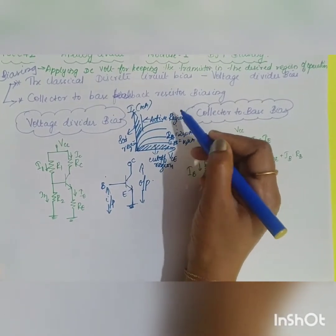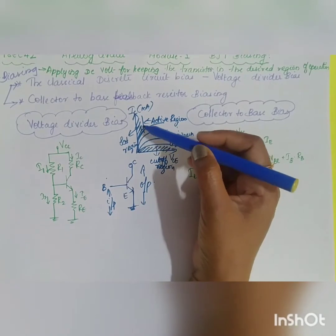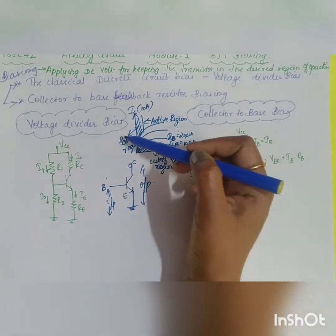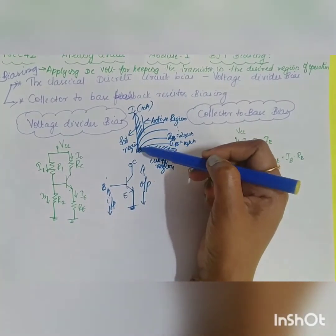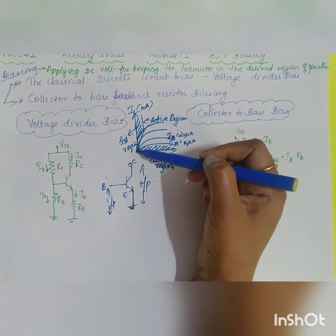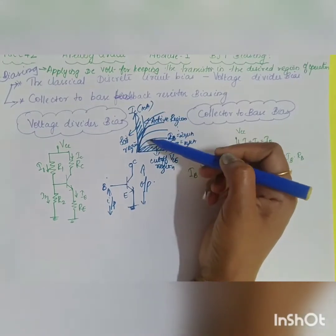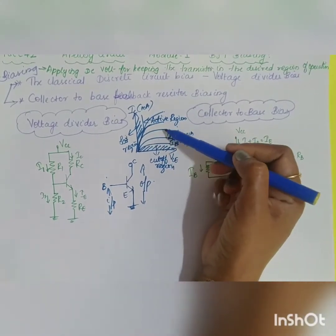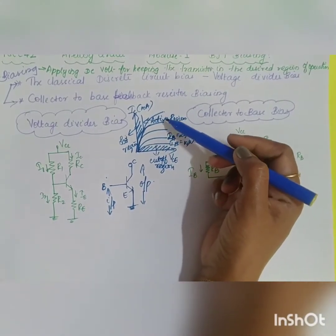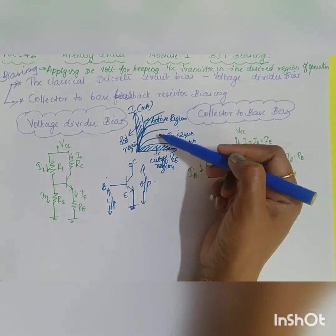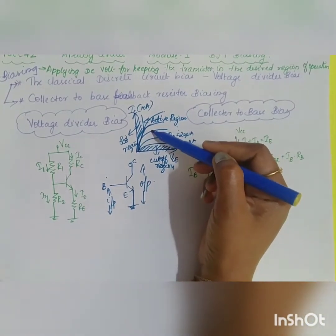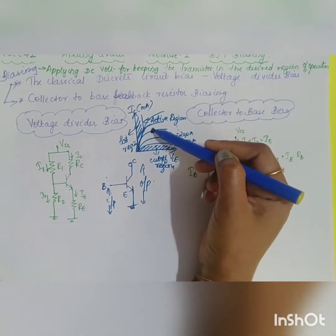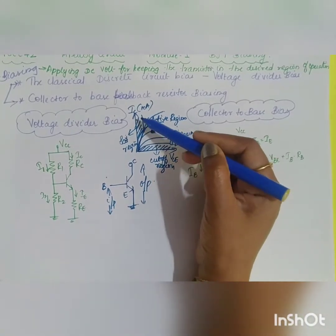If the transistor has to act as a switch, it will operate in the cutoff region and saturation region — that is, it will act as on or off. If the transistor has to act as an amplifier, it has to operate in the active region. You have to fix an operating point such that it is in the middle of the active region.